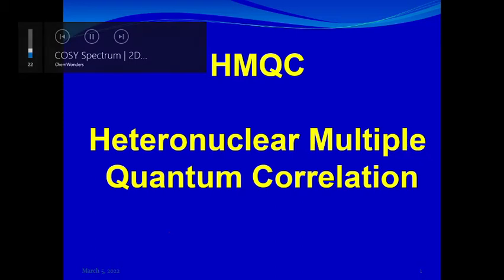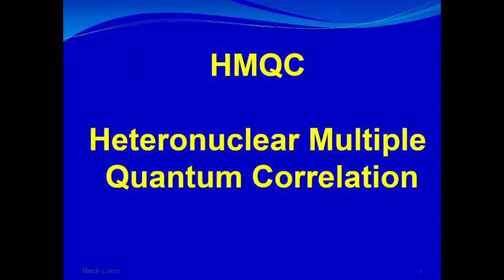1D proton and carbon-13 NMR spectra give us information about the number and different types of protons and carbons present in the molecule. The question is: which proton is attached to which carbon? That question is answered by a two-dimensional NMR technique which we call the Heteronuclear Multiple Quantum Correlation, or in short, HMQC. This session is about HMQC — we will see how we can read and interpret the spectrum.